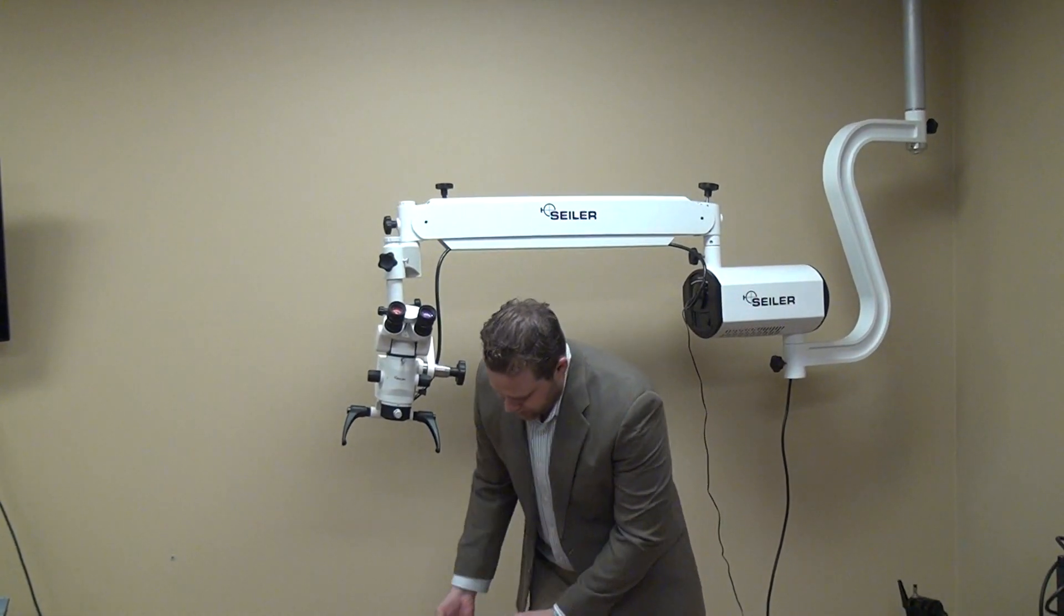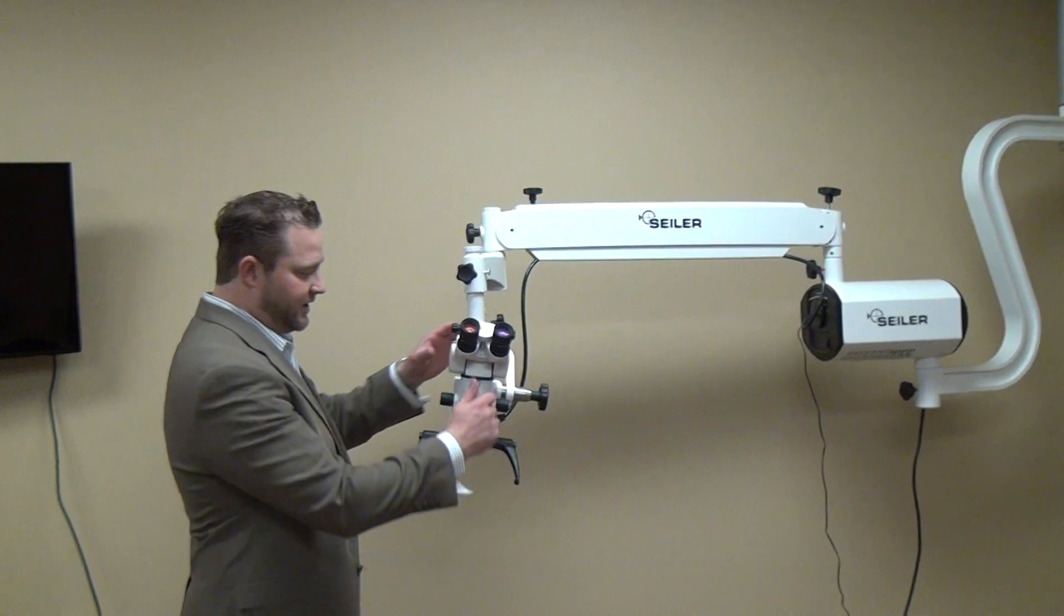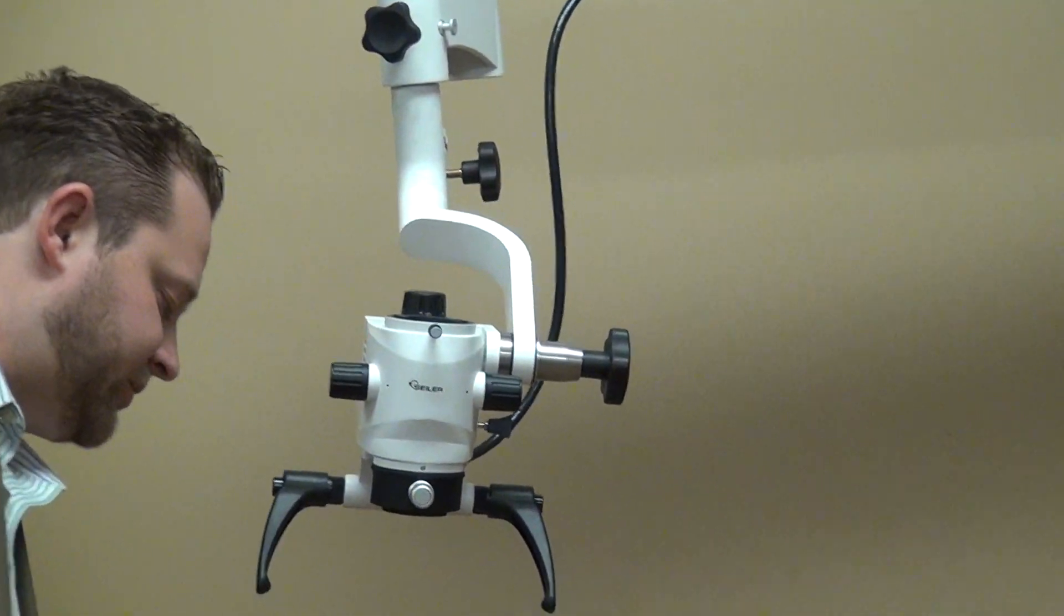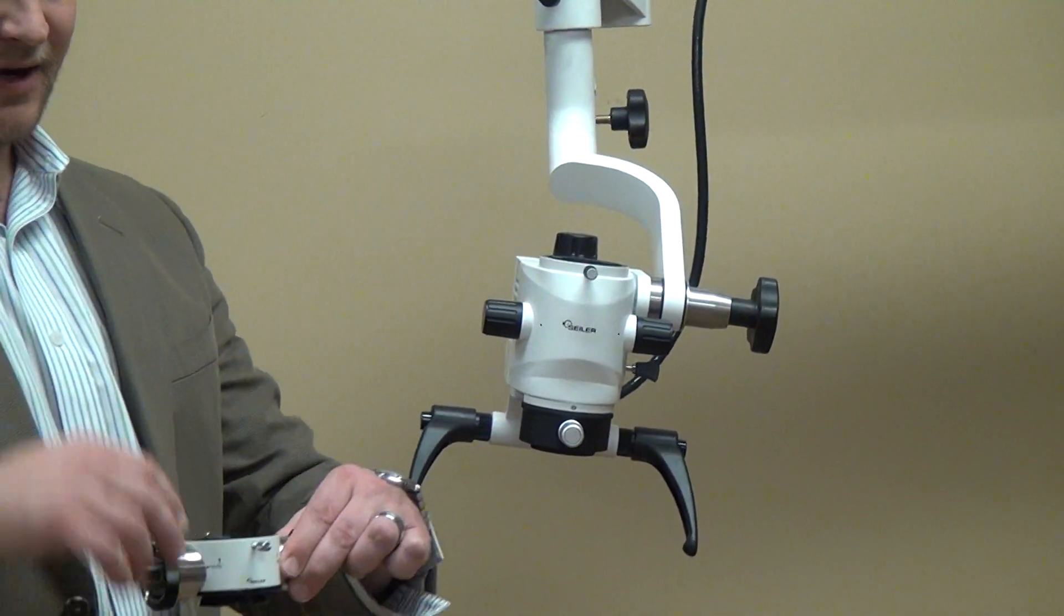First, you put on the beam splitter, which we have a 50-50-2080 beam splitter. So 50% of the light is going to go out the port when you're looking through the microscope.